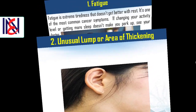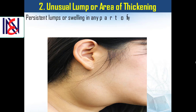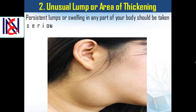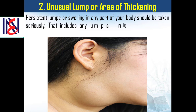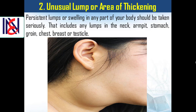2. Unusual lump or area of thickening. Persistent lumps or swelling in any part of your body should be taken seriously. That includes any lumps in the neck, armpit, stomach, groin, chest, breast, or testicle.